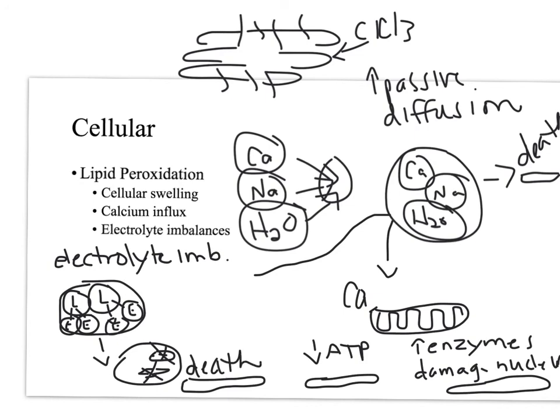You have these three ways that lipid peroxidation contributes to cell death. All of those things are occurring simultaneously as the liver is starting to accumulate large fat molecules and turn into a big fatty liver. That's the cellular breakdown. Hopefully you understand how this poisoning occurs now and it makes sense to you.